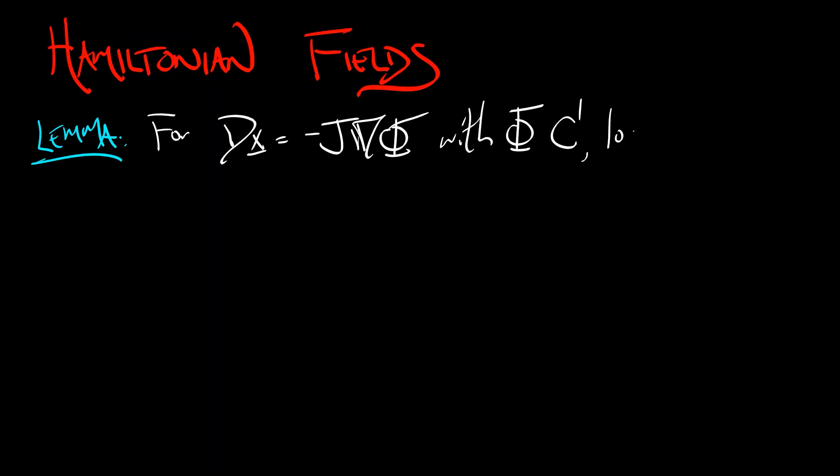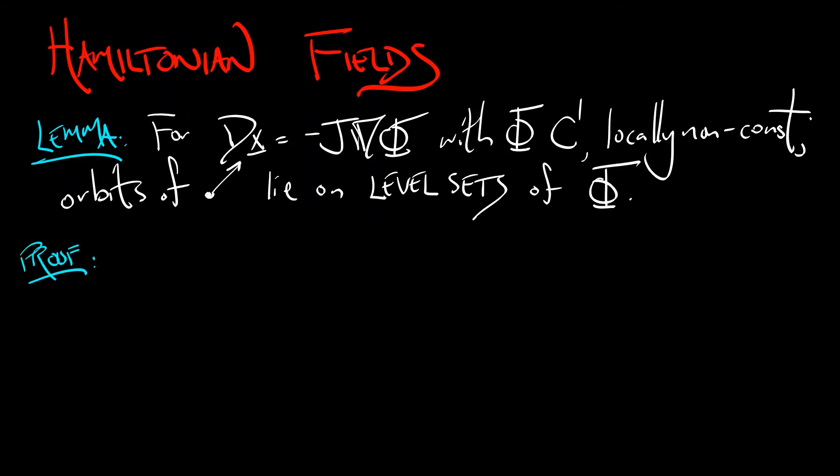In contrast, when you're looking at a Hamiltonian field on the plane, then with the same hypotheses about it being locally non-constant, etc., then the orbits of your Hamiltonian system lie on the level sets of phi. Now, we've actually seen this before. We've done this proof before. Here's a slightly different approach to it.